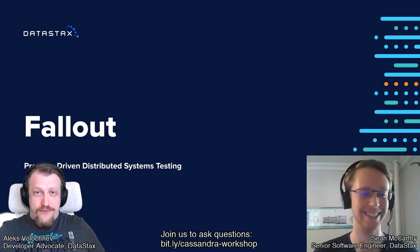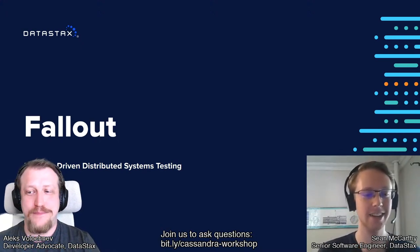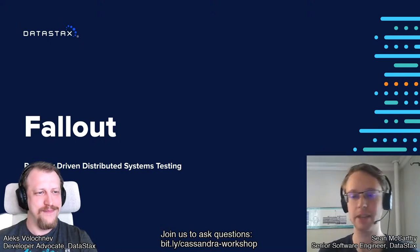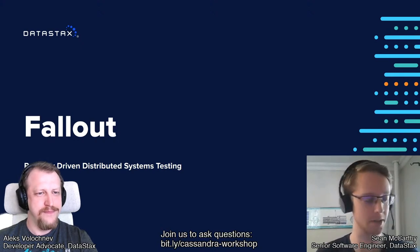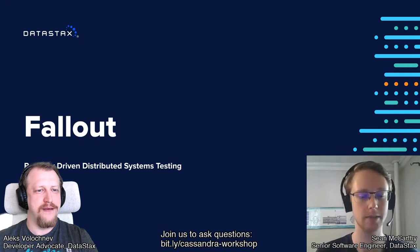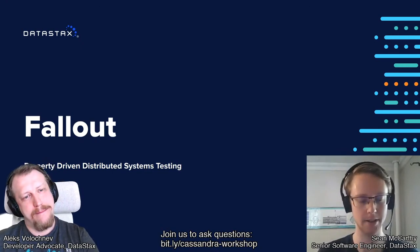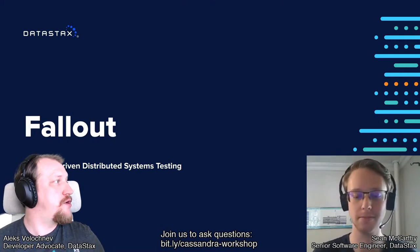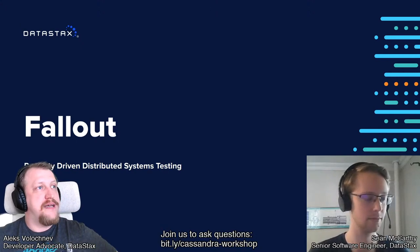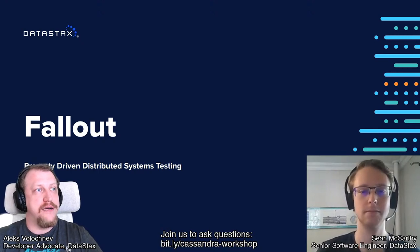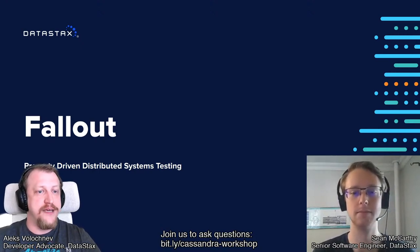The hottest topic for us today is how does Datastax test all of this, because testing for distributed environments and distributed systems is not a simple thing. So today we speak about Fallout. Fallout is a web service which allows us to run complicated distributed system tests against real distributed systems at scale and in production environments, in a sort of automated property-driven fashion.